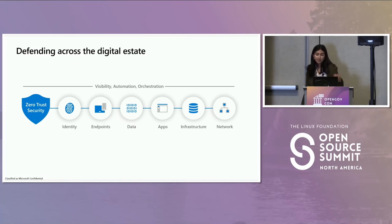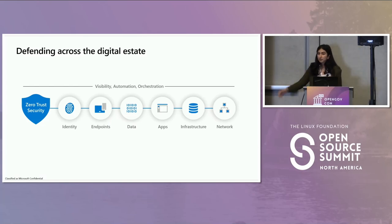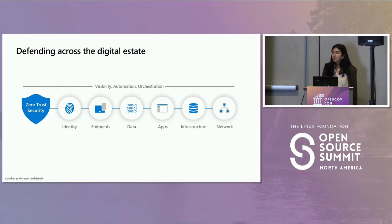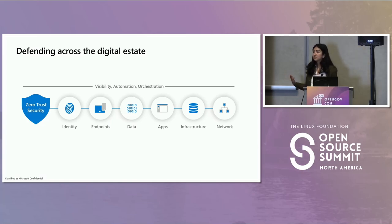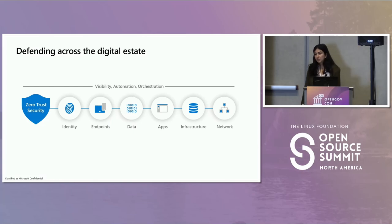Once an identity has been granted access to a resource, data flows to a wide range of endpoints. We no longer just have corporate machines on corporate networks — personal cell phones, BYOD devices, all in different stages of management and ownership, with completely different levels of updates and configurations. This creates a massive attack surface. When we think about endpoints, we need to understand device health and enforce a security baseline to ensure data is accessed in a secure manner.